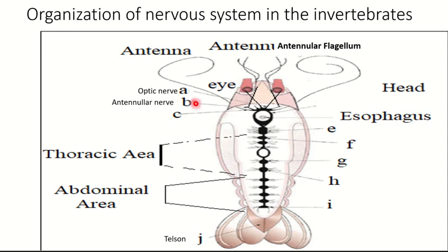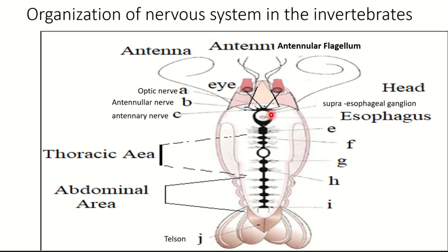We also have the antennae nerve, which controls the antenna that senses any vibration in water. This is the antennae nerve, and it is connected to the antennal flagellum, which is the scent device in the shrimp — it allows the shrimp to smell.